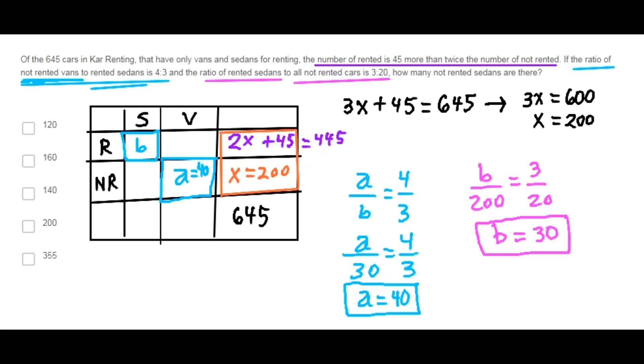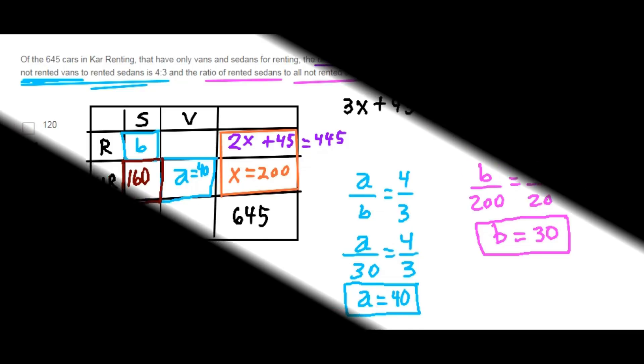The question is the following: How many not rented sedans are there? That's what we want to know. Not rented sedans is 200 minus 40. A hundred and sixty. Choice B is correct. See you next.